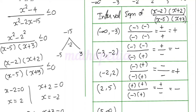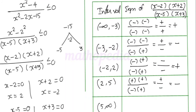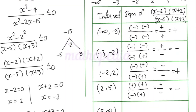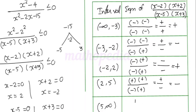Since (2, 5) is negative, the last interval (5, ∞) should be positive. Consider x = 6: (6 - 2) = 4, positive; (6 + 2) = 8, positive; (6 - 5) = 1, positive; (6 + 3) = 9, positive. So (+)(+) / (+)(+) = positive. Confirmed positive.